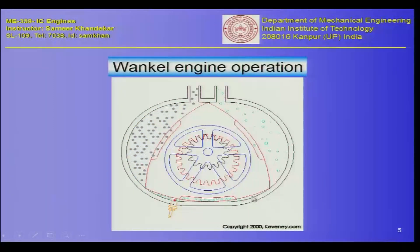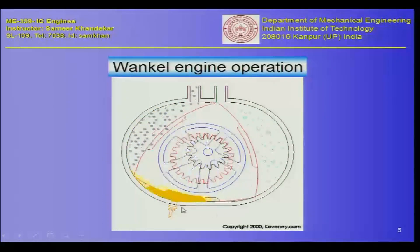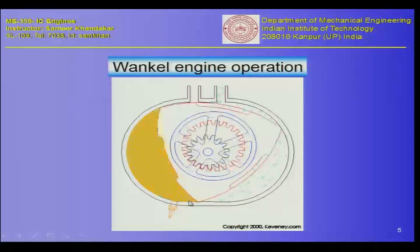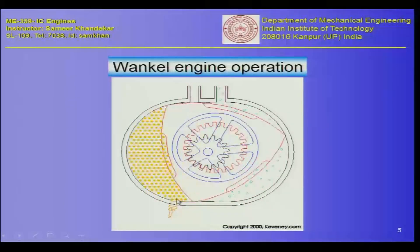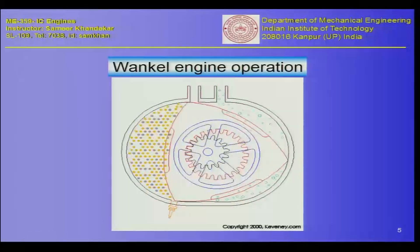This combustion chamber - this particular volume - is our system. The fresh charge comes in, and this very special design of the Wankel lobe is such that it compresses the charge as it travels. As it comes to a certain point a spark occurs and then the expansion takes place. This is a rotary engine.